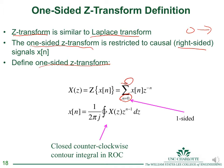We can define the one-sided Z-transform as the sum from zero to infinity of x(n)·z^(-n), instead of minus infinity to infinity as in the two-sided definition.